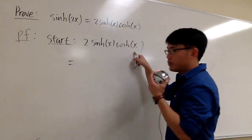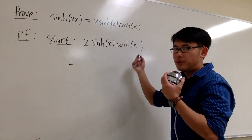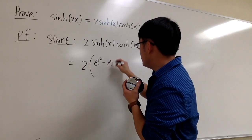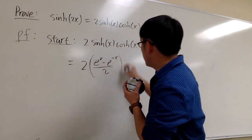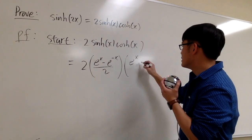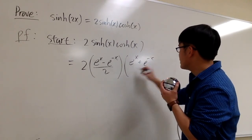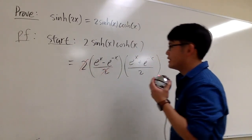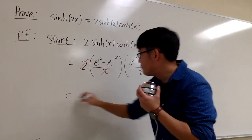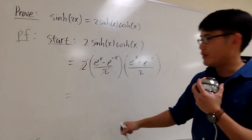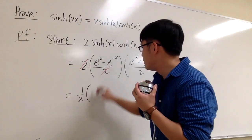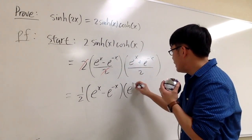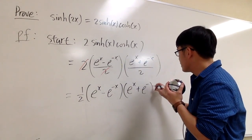The proof goes like this: starting on the right-hand side, we look at 2 sinh x cosh x. We change this back to the exponential world: 2 times (e to the x minus e to the negative x over 2) times (e to the x plus e to the negative x over 2). The 2 cancels with one factor of 2, leaving a half in front with (e to the x minus e to the negative x) times (e to the x plus e to the negative x).